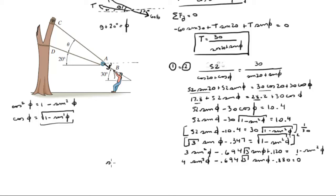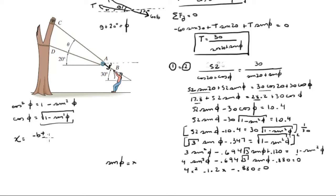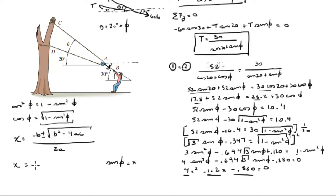Substituting x for sine of phi gives 4x² minus 1.2x minus 0.880 equals zero. Applying the quadratic formula — x equals (negative b ± square root of b² minus 4ac) all over 2a — with a = 4, b = −1.2, c = −0.880 yields x equals 0.642 or x equals negative 0.342.